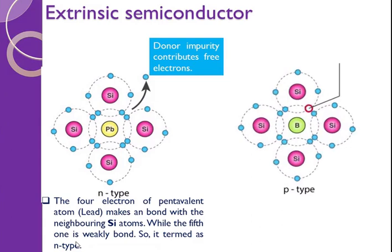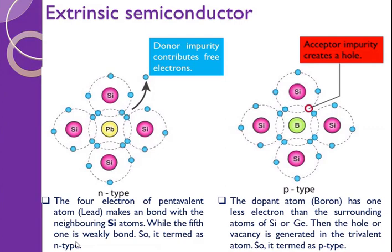Similarly, if we add trivalent impurity inside the silicon atom, the dopant atom — like boron, which is a trivalent impurity — has fewer electrons than the surrounding silicon or germanium atoms. So a hole or vacancy is generated in the trivalent atom. This is because boron has only three electrons in the outermost shell, so one missing electron creates a hole inside the extrinsic semiconductor. Such a semiconductor is called P-type semiconductor.